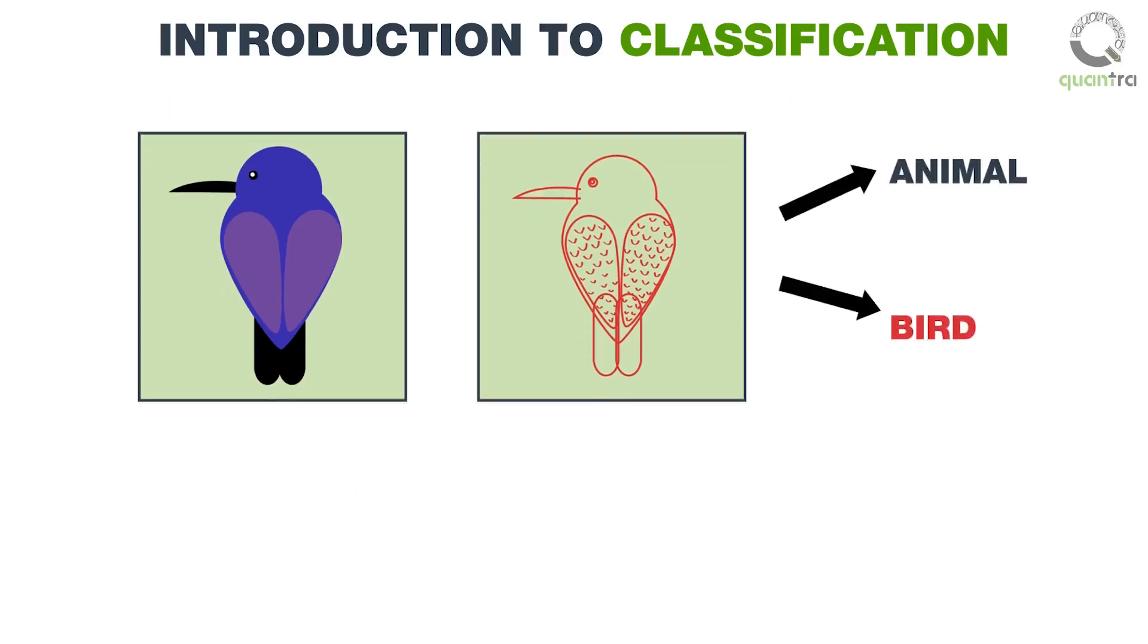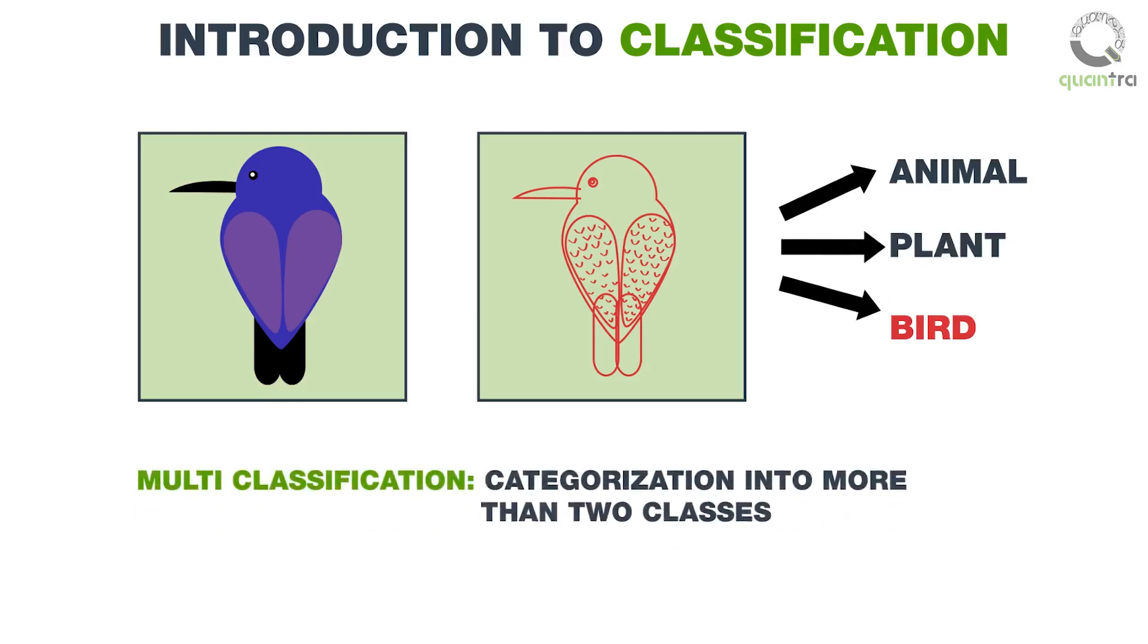Taking the same example forward, we can categorize the data into multiple categories, such as animals, birds and plants, which is more than two classes. Such classification, which has more than two classes is known as multi-classification.